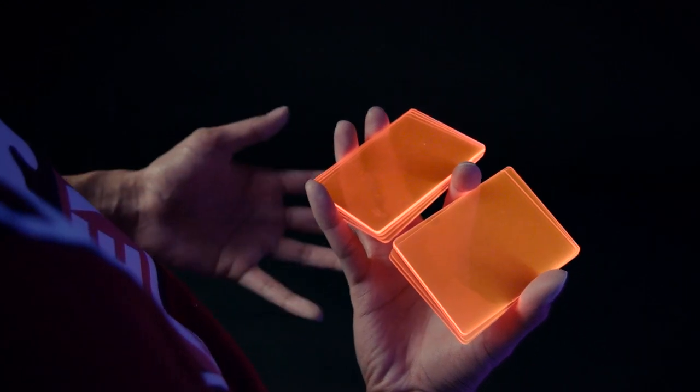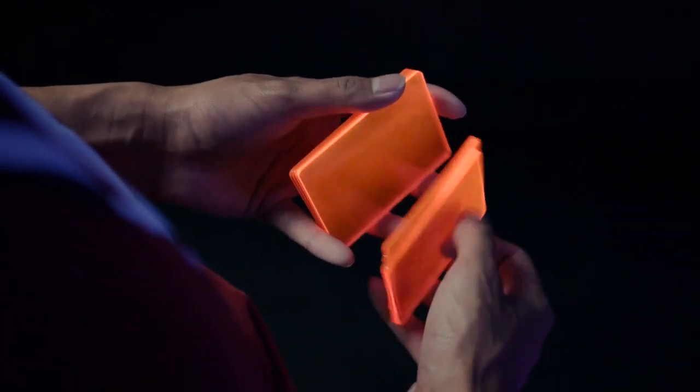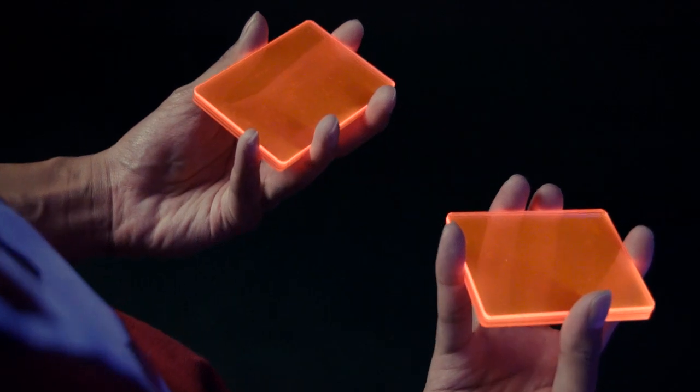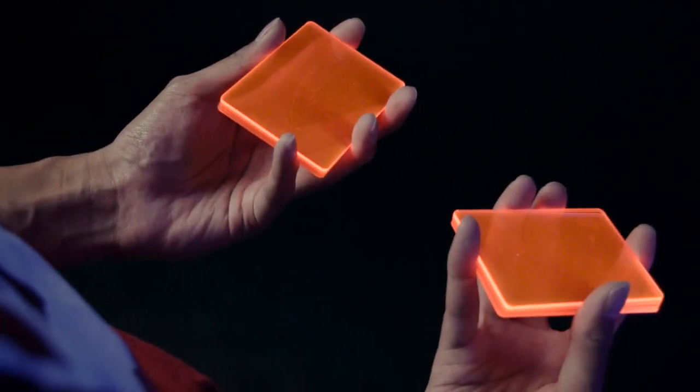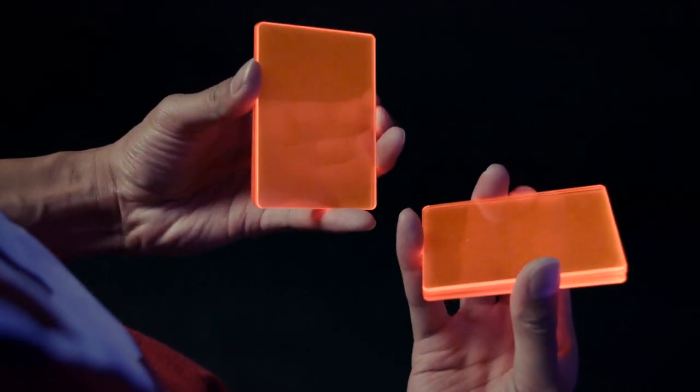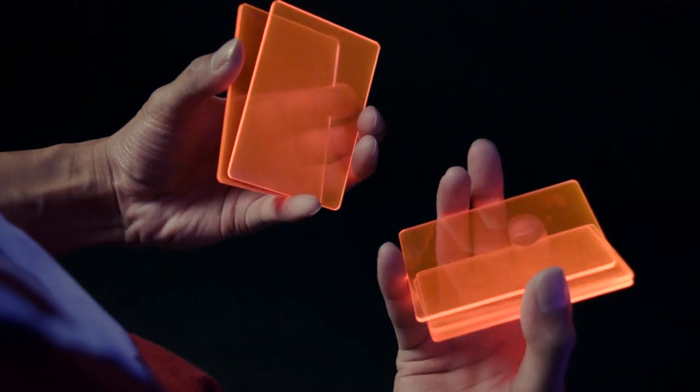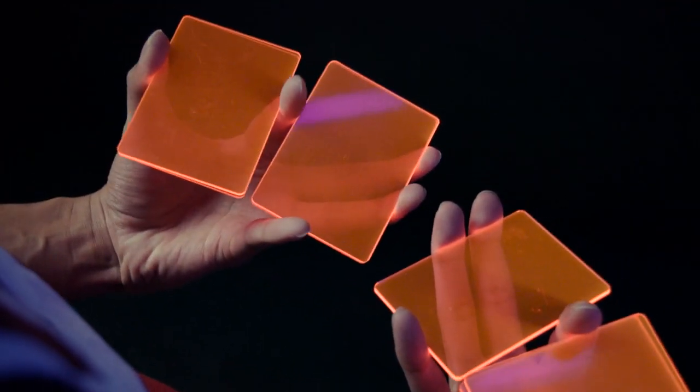Once you got that move down, you're going to split the deck in half with your thumb, roll it over. So now you have two packets, two halves in a straddle grip, and you're going to do that cut. You're going to split the deck, move it over, and you're going to grip it like so.